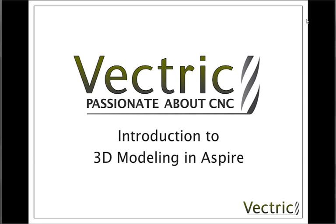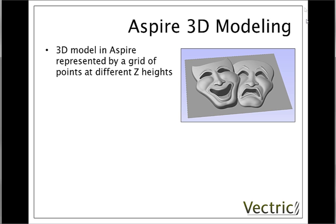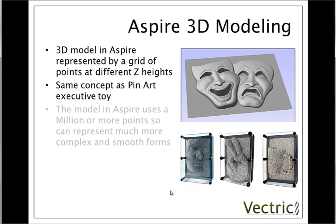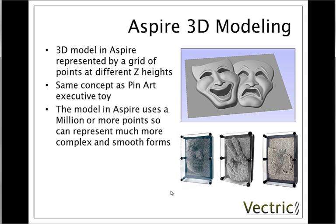In this video we're going to introduce you to some key ideas that will help you when you start creating 3D models in Aspire. The 3D objects in the software are represented by a grid of points, each one of which can be at a different z-height. A good way to think of this is like a very dense version of one of these pin art executive toys. In Aspire we'll use a minimum of a million points, so we can represent much more complex and smooth forms within the software.